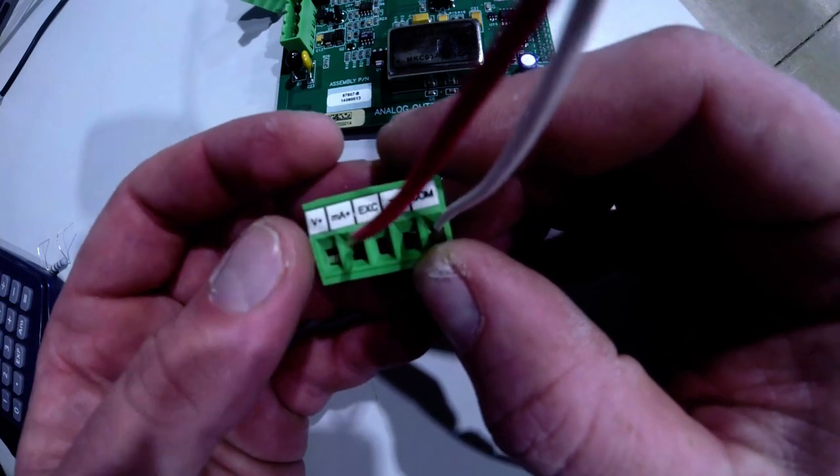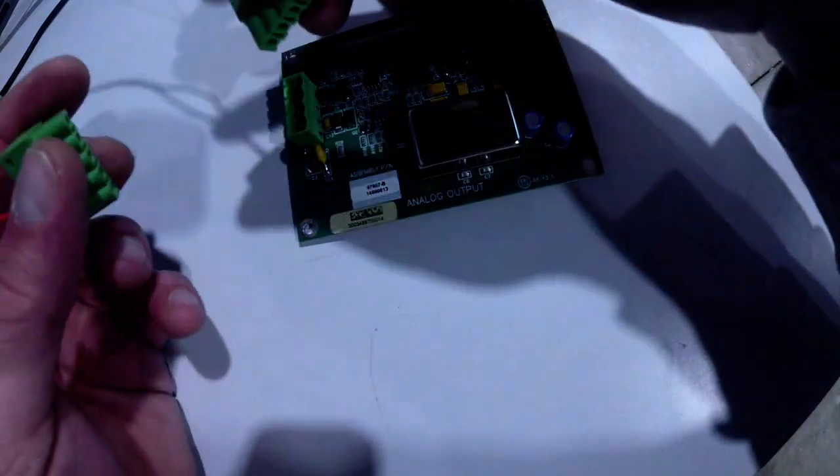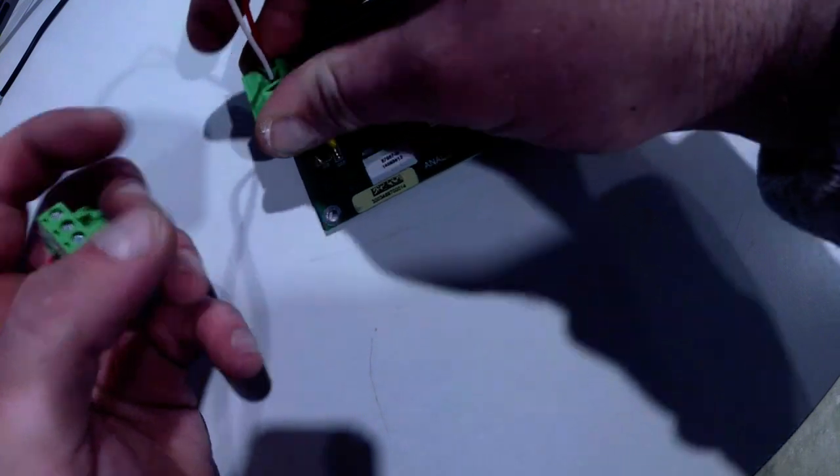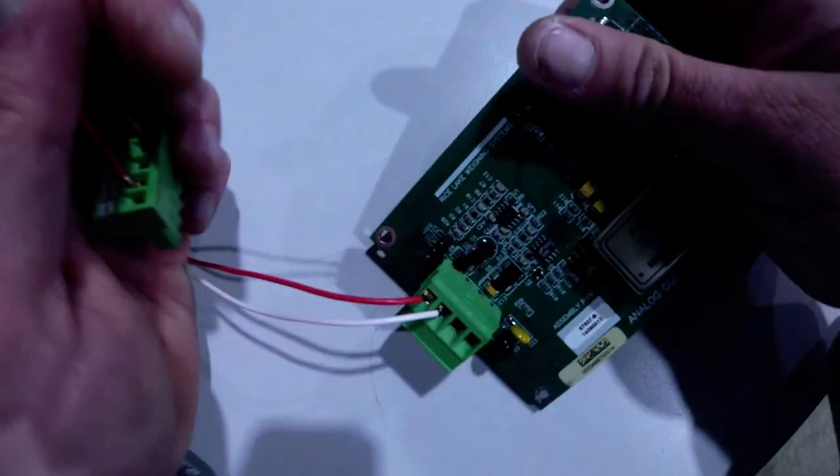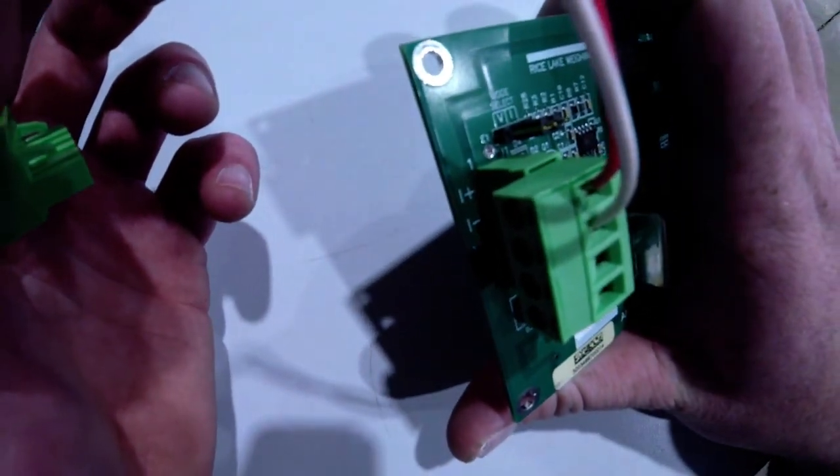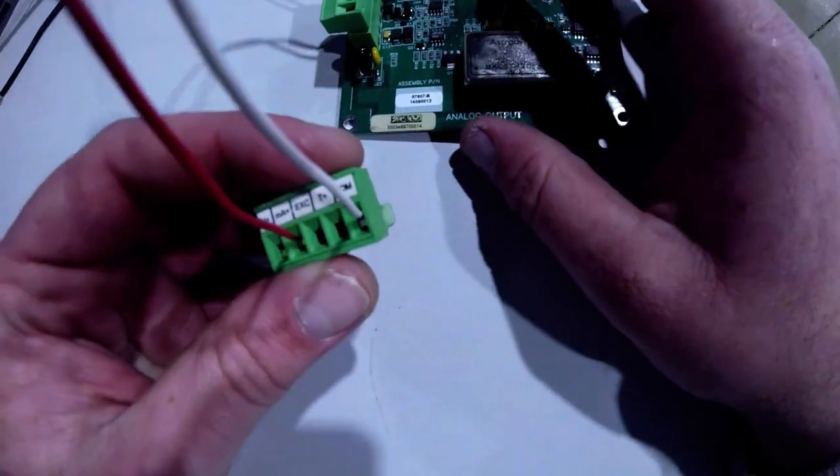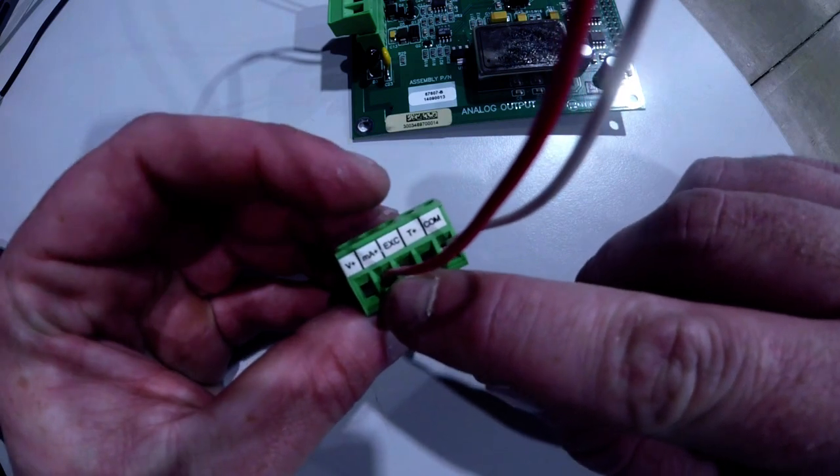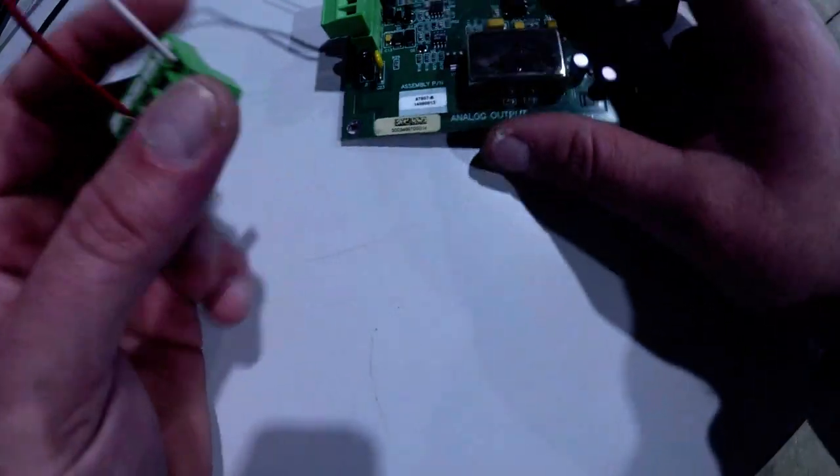As you can see here, we have our connector already made up. So we have I plus and I minus. I plus going to red and I minus going to white. I minus is then going on white to common and I plus is going to milliamp plus.